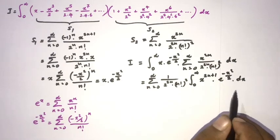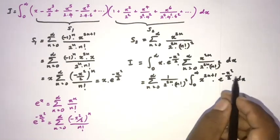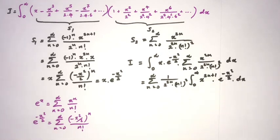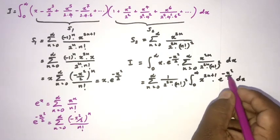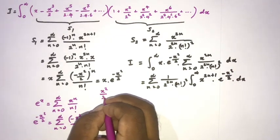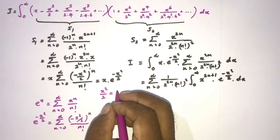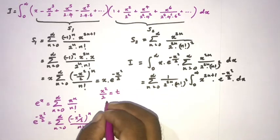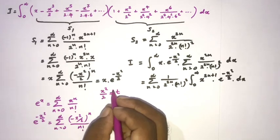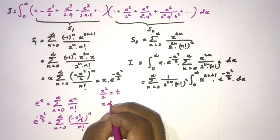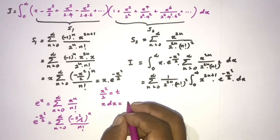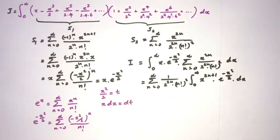We recognize the gamma function structure — it involves e^(-t). So I'll use the substitution t = x²/2. Differentiating gives 2x dx = 2 dt, so x dx = dt.